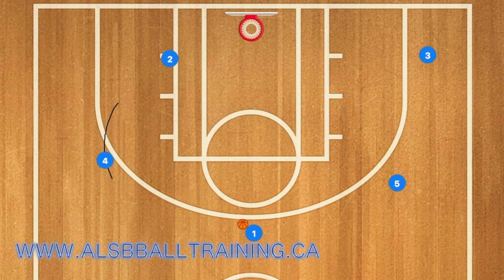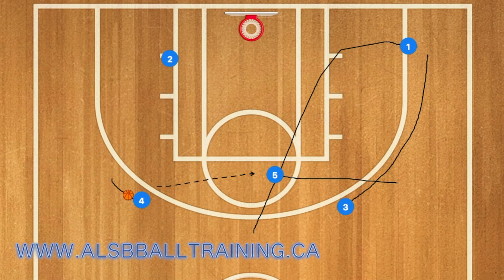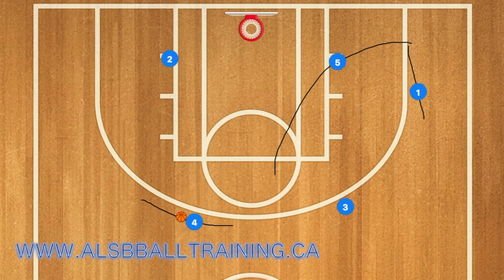Next, four will then pop out to the three-point line himself, and one will pass for the ball. One will then cut down to the right post. Five will then cut to the free-throw line — he may be open for a mid-range shot. And three will fill player five's spot.